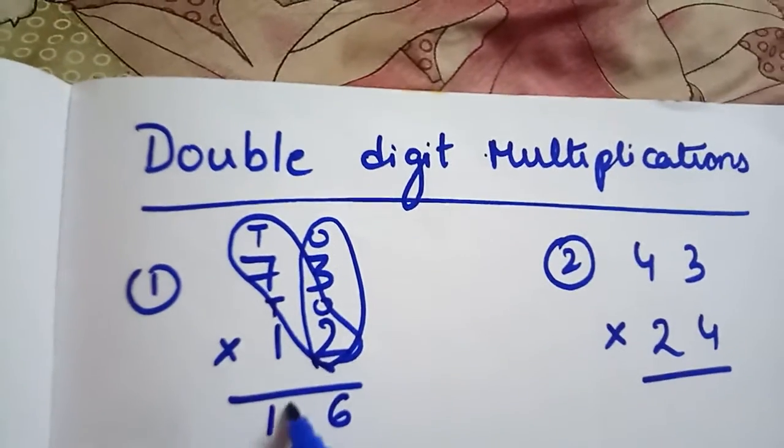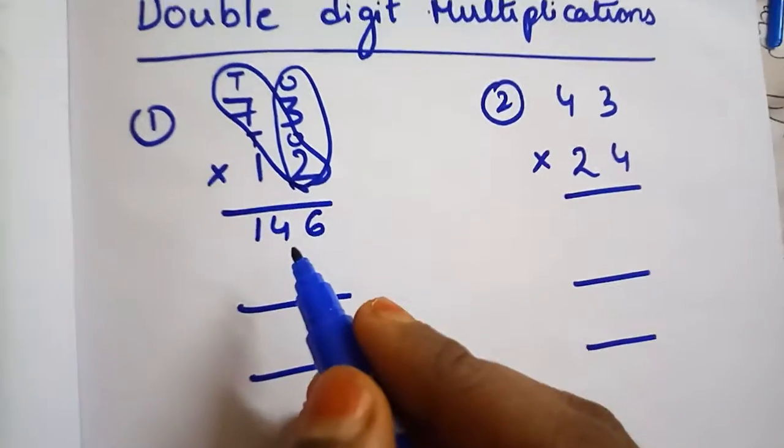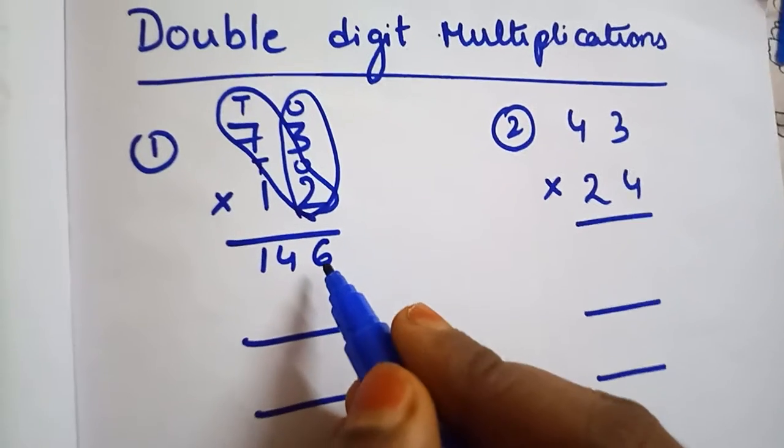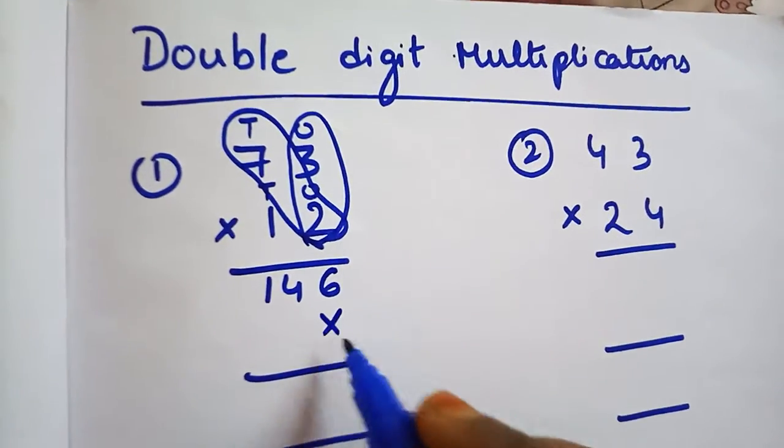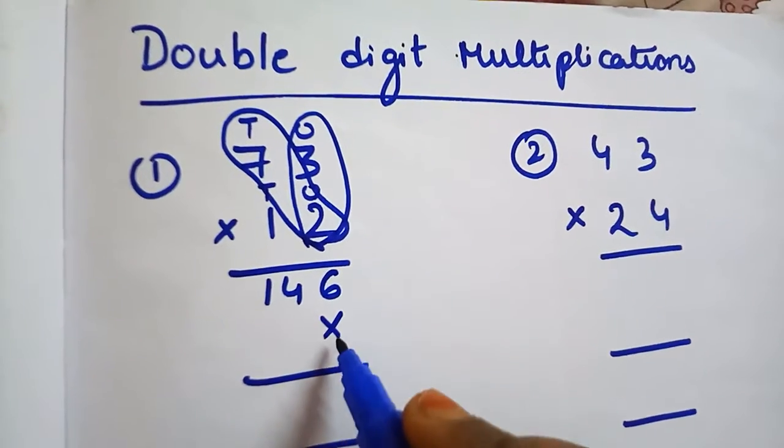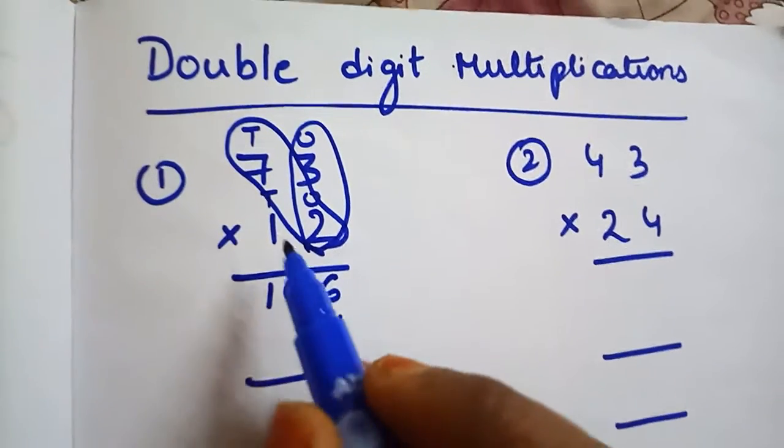Two sevens are 14. Now here the first number is 6, so down to 6 we have to write an into mark. Down to the first number we have to write an into mark. Next, ones place is over.